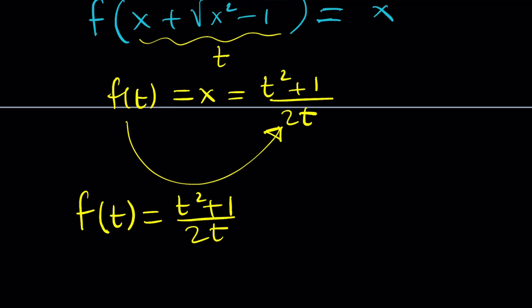And if you want to write the result using x, again, this x is not the other x anymore, because these are dummy variables. We can just use them and discard them and use them again for different reasons. And f of x can be expressed as x squared plus 1 all over 2x. So that would be the solution.